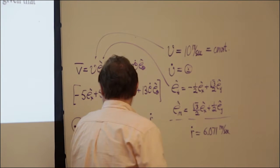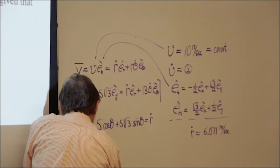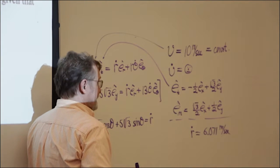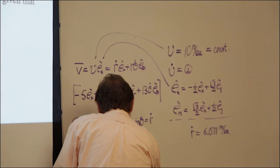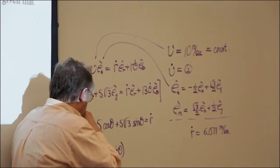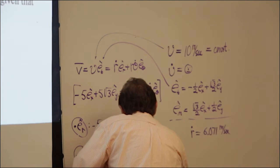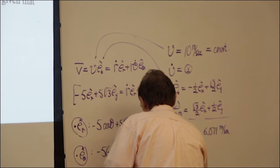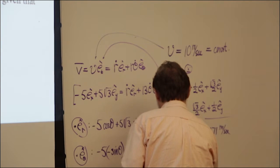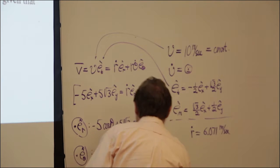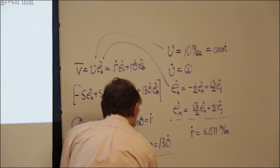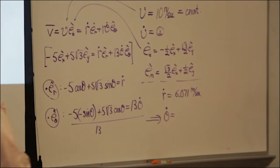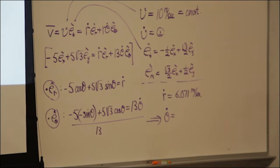To get theta-dot, dot the equation on both sides with the transverse unit vector e_theta. That gives: minus 5 times (e_x · e_theta), which is negative sine of theta, plus 5 radical 3 times (e_theta · e_y), which is positive cosine — equals 13 times theta-dot. Substituting sine and cosine values and dividing by 13, theta-dot turns out to be positive 0.611 radians per second.